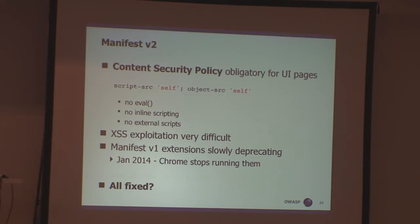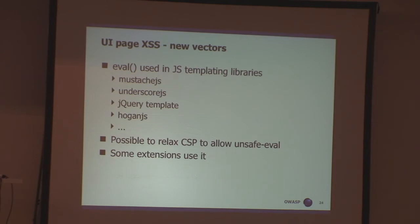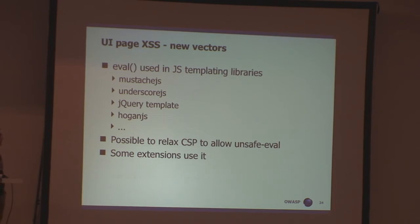A question arose: are we fixed? Is the world of Chrome extensions already secure? Well, it turned out it's not secure yet — there are still interesting vectors of attack. There's still a possibility to exploit UI page XSS within Google Chrome extensions because a lot of JS templating libraries depend on the eval function. It quickly became a problem when many extensions used those templating libraries. Google decided, under pressure from extension developers, to allow specifying 'unsafe-eval' within the extension content security policy.